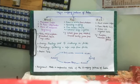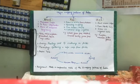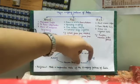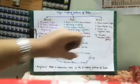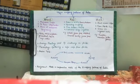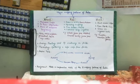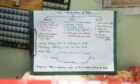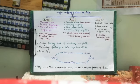The third cropping pattern is Zaid crops. These are short-season crops grown during summer, from March to July. They are grown on irrigated lands because natural water is not available then. Examples include pumpkin, cucumber, and bitter gourd.